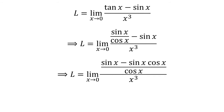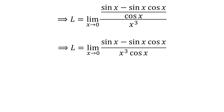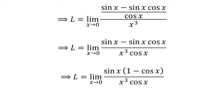Addition of the fractions in the numerator gives us L equal to the limit of sine of x minus sine of x times cosine of x, upon cosine of x, upon cube of x as x approaches zero. Further simplification gives us L equal to the limit of sine of x minus sine of x times cosine of x upon cube of x times cosine of x as x approaches zero. Taking out common factor sine of x in the numerator gives us L equal to the limit of sine of x times 1 minus cosine of x upon cube of x times cosine of x as x approaches zero.